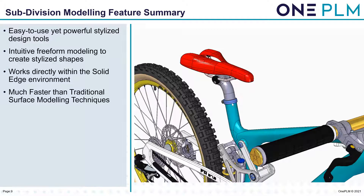So let's have a summary of what we've done. Easy to use yet powerful stylized design tools. Intuitive freeform modeling to create stylized shapes — it allows us to select faces, edges, drag, rotate, and use lots of different tools. It's directly within the Solid Edge environment, so we don't have to load a separate program. Much faster than traditional surfacing modeling techniques. For that saddle, we'd normally have to create several different sections, by-rails, and other options to get the shape right. Subdivision allowed us to create that very quickly.